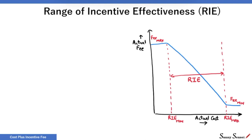The share ratio mentioned in the CPIF contract is valid in this range. For other regions, to the left and to the right of RIE, the share ratio is 100 to 0. Please have a look at my introductory lesson on CPIF contracts for further details.